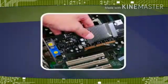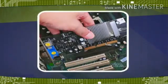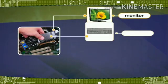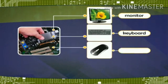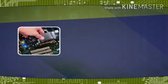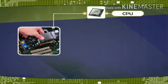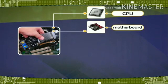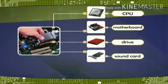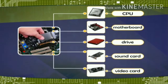Types of hardware are either external — monitor, keyboard, mouse, printer, etc. — or internal: CPU, motherboard, drive, sound card, video card, etc.